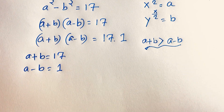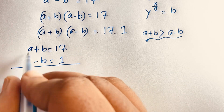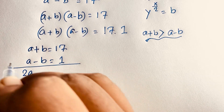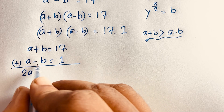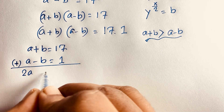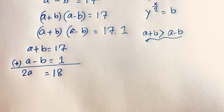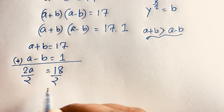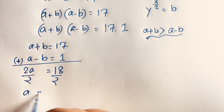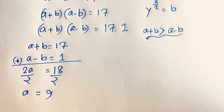So a plus b equals 17 and a minus b equals 1. If I add both equations, the b terms cancel, and I get 2a is equal to 18, since 17 plus 1 is 18. Then dividing both sides by 2, I find that a is equal to 9.